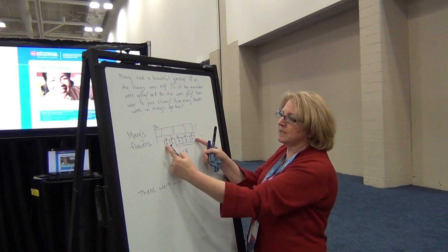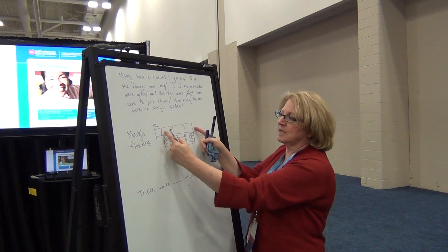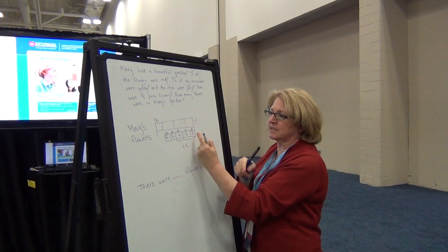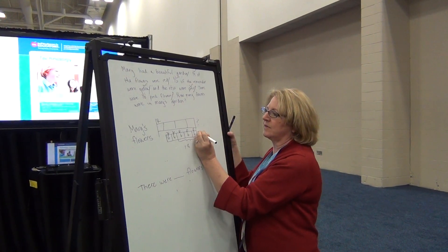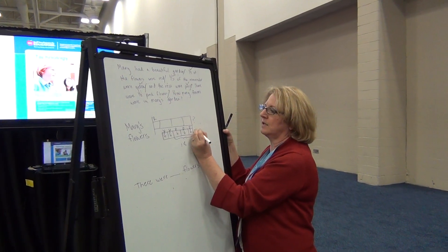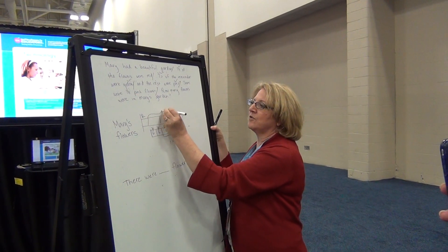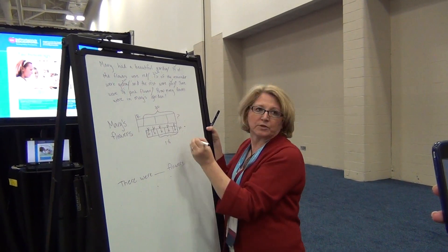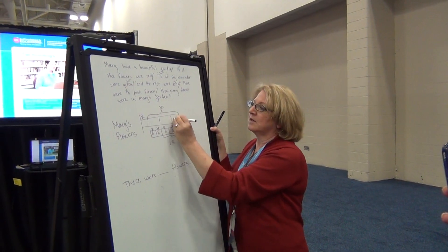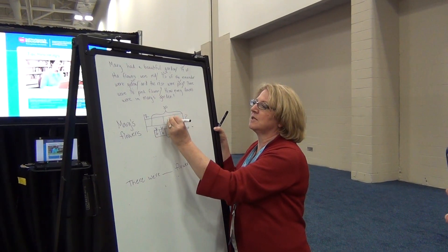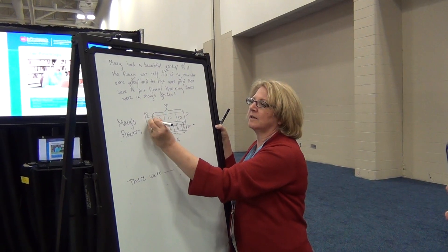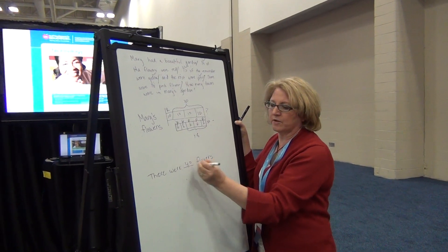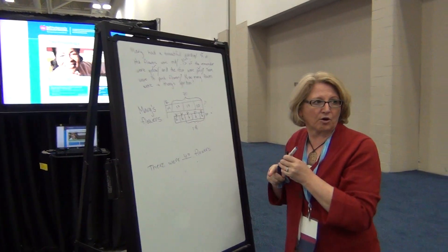Now remember, this piece is equal to that. So this whole thing here is 6 times 5, which is 30. And I know this up there is also equal to 30, so each of these is worth 10. That means that one's worth 10. So there are 40 flowers in her garden.